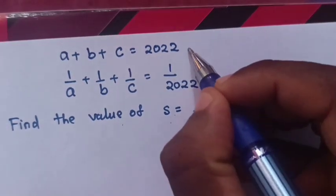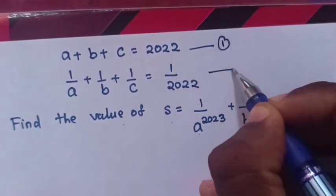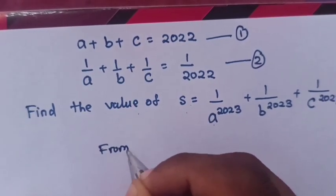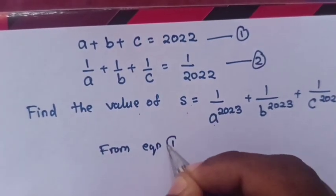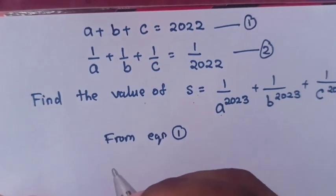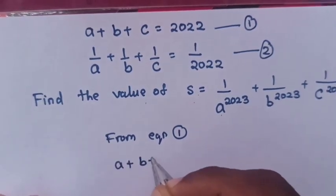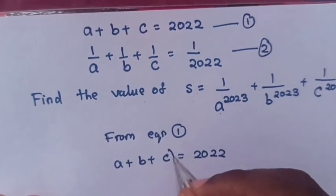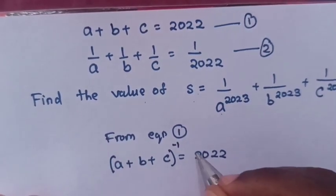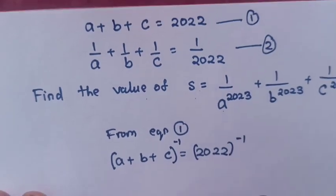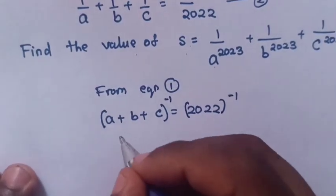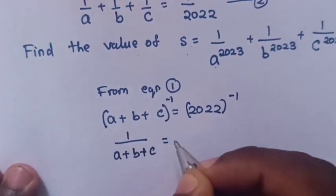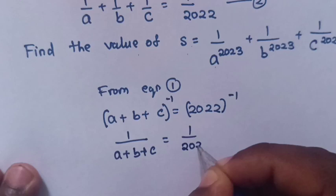First, we label this as equation 1 and this as equation 2. From equation 1, which is A plus B plus C equals 2022, we apply a power of negative 1 on both sides — this is the same as taking the inverse — giving us 1 over (A plus B plus C) equals 1 over 2022.